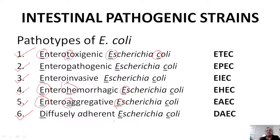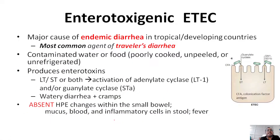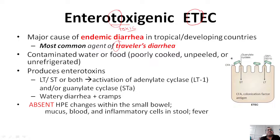The first pathotype is Enterotoxigenic E. coli, or ETEC. As the name suggests, toxin production is the key here — 'T' stands for toxin. ETEC is a major cause of endemic diarrhea in tropical and developing countries, and most importantly, it is the most common agent of travelers' diarrhea. A useful mnemonic: 'T' for toxin strain, 'T' for travelers' diarrhea.